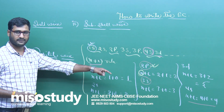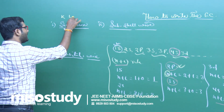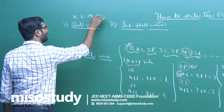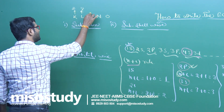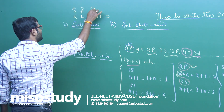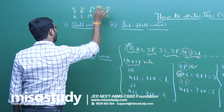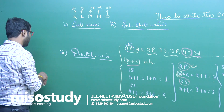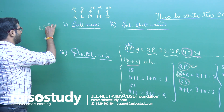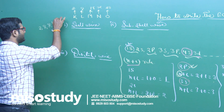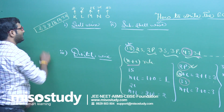This is sub-cell wise. Now, cell-wise: we have shells K, L, M, N, O. K has a maximum of 2 electrons, L has a maximum of 8 electrons, then 18, then 32, then 50. We know the magic numbers: 2, 8, 8, 18, 18, 32. I will discuss this later.